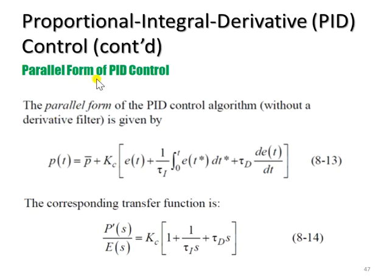In the parallel form of PID control, the algorithm can be written as this equation where we can see that the controller output P(t) is equivalent to P bar plus Kc in brackets, which includes all the PID calculations. So we have the error term here,